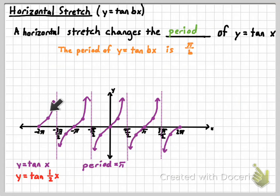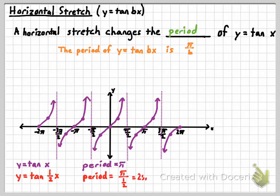I've got the basic tangent graph already sketched here, and we're going to compare it to the horizontal stretch created in the equation y equals tangent of 1 half x. The first thing we need to do is figure out what is the period of that function. We'll calculate the period by doing pi divided by b, so pi divided by 1 half, and that happens to be 2 pi. So when you multiplied the input value by 1 half, you ended up doubling the length of one cycle. This is going to affect our asymptotes.